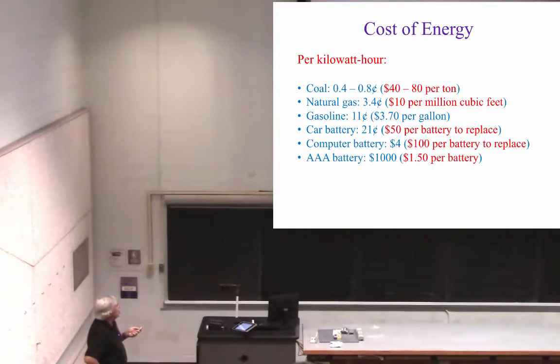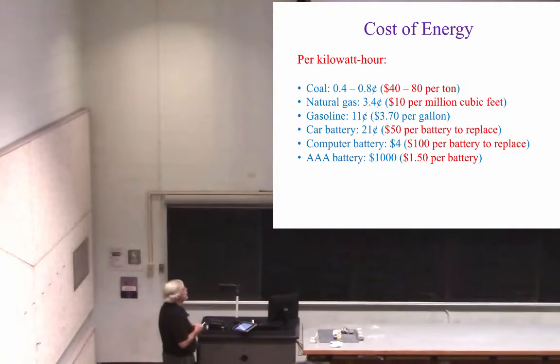Gasoline, if it's $3.70 a gallon, and it's typically cheaper than that right at this moment in Manhattan. On the other hand, when I was in Lucas, Kansas, it was almost exactly $3.70 a gallon last weekend. That works out to be about 11 cents per kilowatt hour. Car battery, 21 cents per kilowatt hour. Computer battery, about $4 per kilowatt hour. A AAA battery, really expensive. A disposable AAA battery, about $1,000 per kilowatt hour.